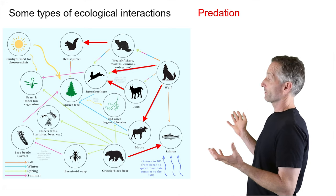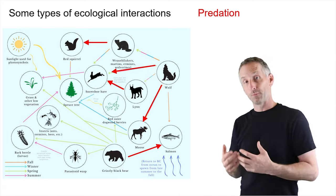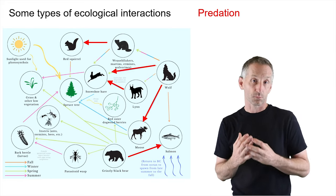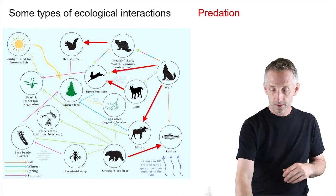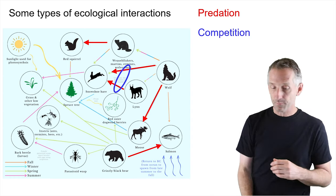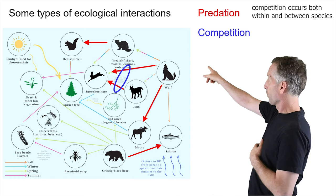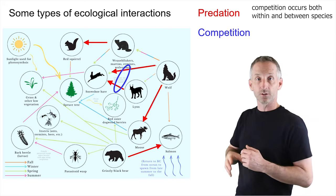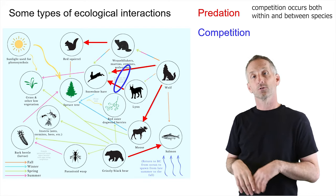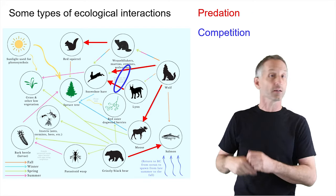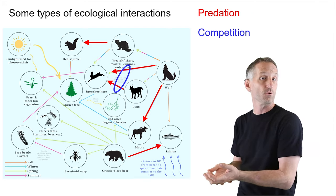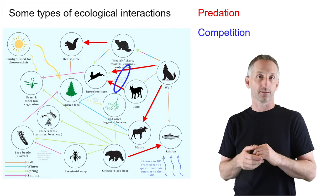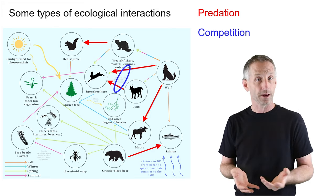Another type of ecological interaction is competition between organisms for shared resources. In this representation, both wolves and lynx are consuming snowshoe hares. If wolves consume more snowshoe hares, there are fewer available for the lynx, which might then impact the population of lynx and lynx behavior.